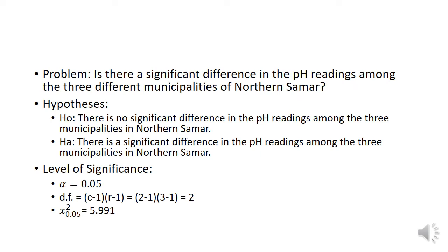For our problem statement: is there a significant difference in the pH readings among the three different municipalities of Northern Samar? For our null hypothesis: there is no significant difference in the pH readings among the three different municipalities of Northern Samar. For our alternate hypothesis: there is a significant difference in the pH readings among the three different municipalities of Northern Samar. The level of significance is alpha equal to 0.05.